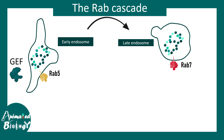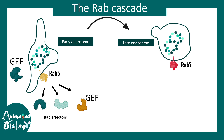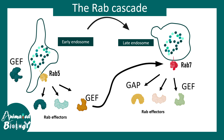Consider the transition from early endosome to late endosome: RAB5 activates all its RAB effectors. Among those RAB effectors is also a GEF — but this GEF is not for RAB5, it is for RAB7. This GEF activates RAB7, and RAB7 then triggers its own RAB effectors. Among those is a GEF for the next upcoming RAB, and also a GAP that provides negative feedback to RAB5, depleting it. So RAB5 and all its effectors are depleted, RAB7 takes over, and the cascade continues. This RAB cascade ensures the distinct identity of different membrane compartments inside the cell.